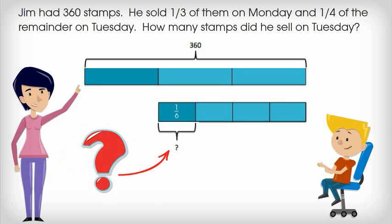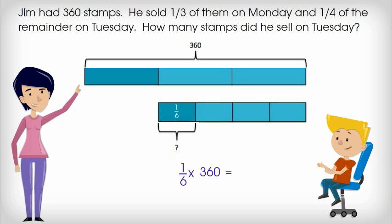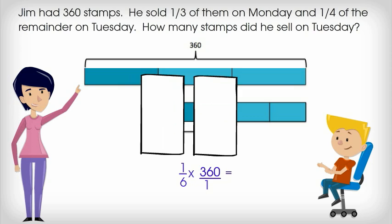On Tuesday, Jim sold one sixth of 360 stamps. We can solve by multiplying. Remember, a whole number can easily be changed into an improper fraction by putting the whole number over a denominator of one. 360 is the same as 360 divided by one. Press pause and solve this multiplication problem in your notebook. Be sure to show your work. When you've finished solving the problem, click play and continue the video.